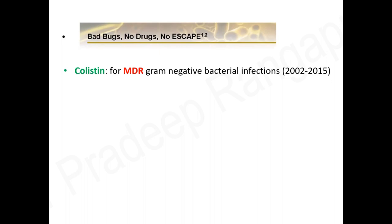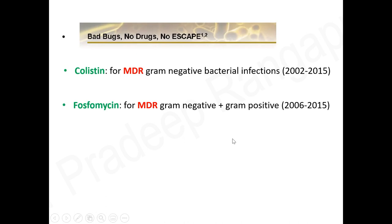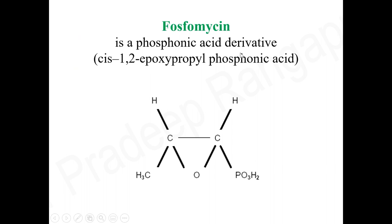Once we have carbapenem-resistant organisms, MDR organisms, or XDR, some of the older drugs have been repurposed. Phosphomycin is similar to colistin in this regard — colistin came as a repurposed drug for MDR gram-negatives, with extensive utilization and studies between 2002 and 2015. Phosphomycin also emerged around that time, positioned for gram-negative and gram-positive infections. The key difference from colistin is that phosphomycin has good effect on gram-positives as well.